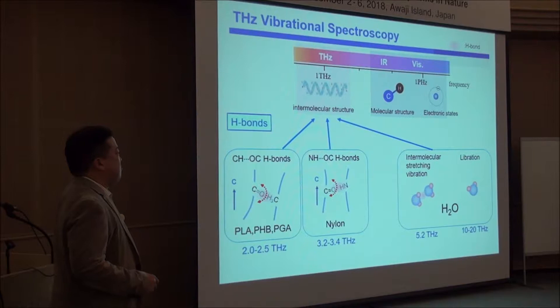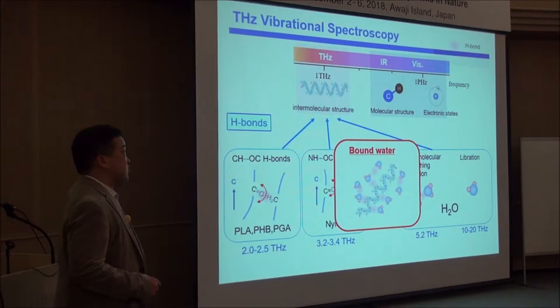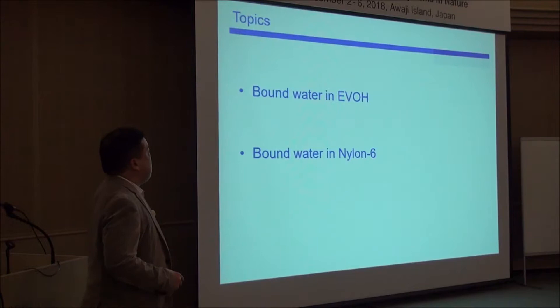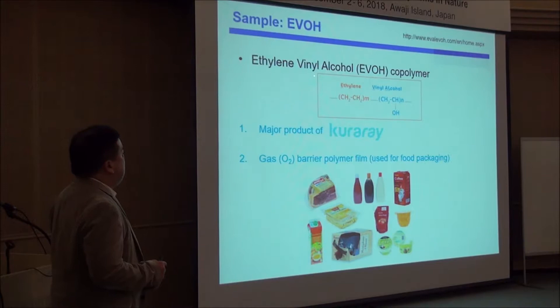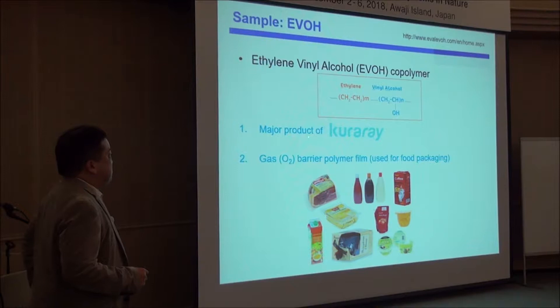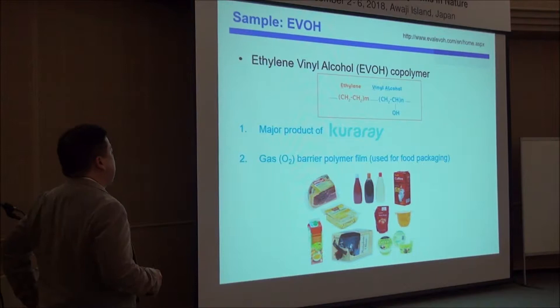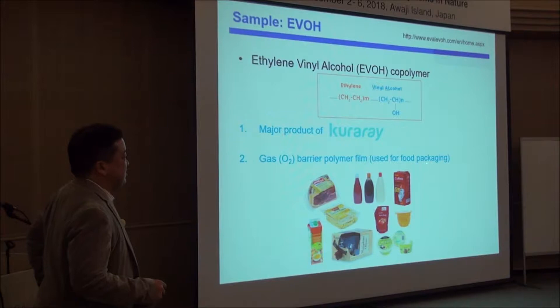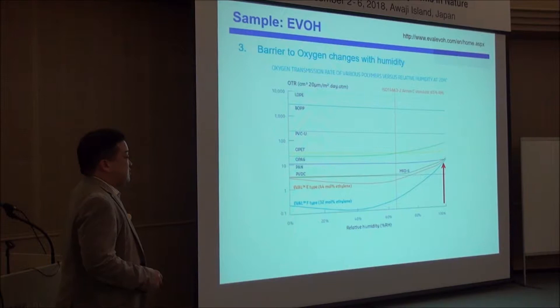Now we are going to look at a much more complicated system: bound water in polymers. Today I want to talk about two topics — bound water in EVOH and bound water in nylon 6. EVOH is ethylene vinyl alcohol copolymer, a copolymer of ethylene and vinyl alcohol — a very simple polymer. This is a major product of Kuraray, a Japanese polymer industry, and they use this polymer as a gas barrier for wrapping food products.